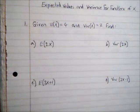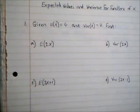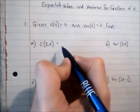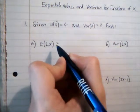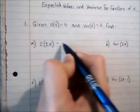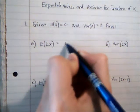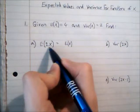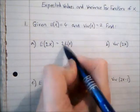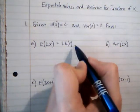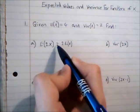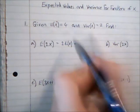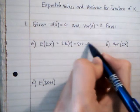For E(2X), to find the expected value for a function of X, you multiply E(X) by whatever the coefficient of X is inside the function, so by 2. Then we add or subtract any constant part of the function, but here there isn't any, so it's just 2E(X), which is two times 4, giving us a value of 8.